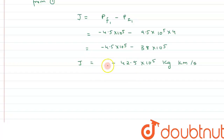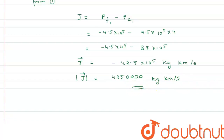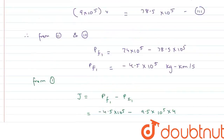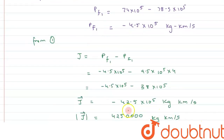The negative sign simply indicates direction — the impulse is in the leftward direction. In terms of magnitude, the impulse on the first stage rocket is 42.5 × 10⁵ kg·km/s, which equals 4,250,000 kg·km/s. Comparing with the options, option B is the correct answer. I hope you understood the concept well.